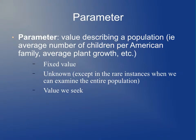Some terminology to start. First, a parameter is a value describing a population—the average number of children per American family, average plant growth, things like that. It's some fixed value. In principle, we could find every single family in the United States and calculate the average number of children across all these families and have the exact number. That number is fixed and will not change.